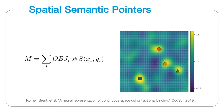This figure shows a simple example. A memory vector of four items was queried by unbinding each object's semantic pointer. The resulting vector representing all items' locations is visualized here as a heat map. The color of a point is the dot product similarity of the resulting vector with the spatial semantic pointer representing that point.